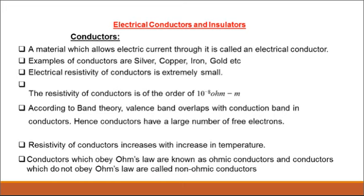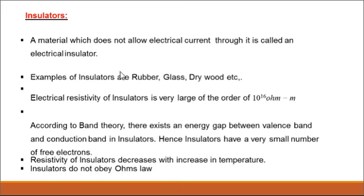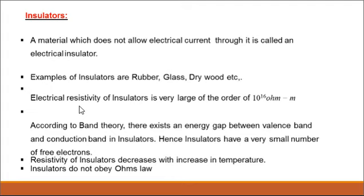And what about insulators? An insulator is a material which does not allow electrical current through it. Examples are rubber, glass, and dry wood. The electrical resistivity is very high — the order of resistivity is 10 to the power of 16 ohm meters.